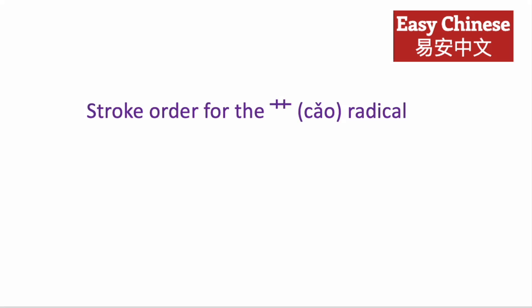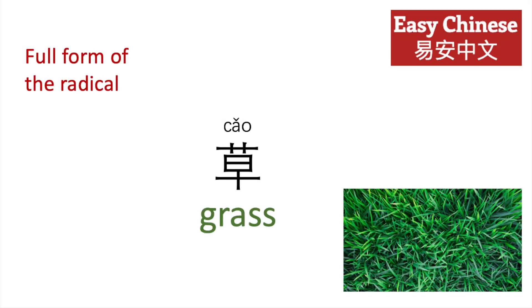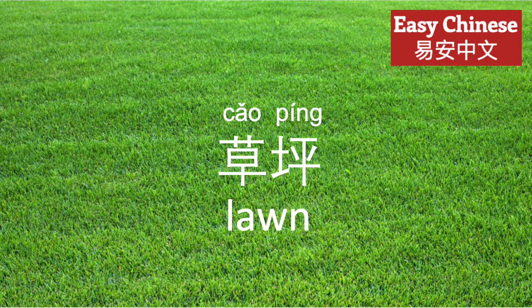The stroke order for the Cao radical is one, two, and three. This is the full form of the radical. It's also the character for grass. And Cao Ping is lawn.